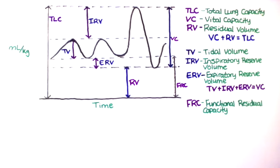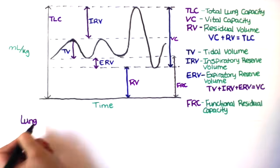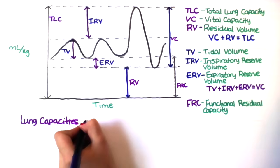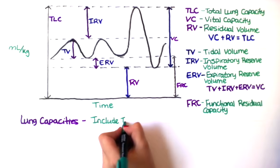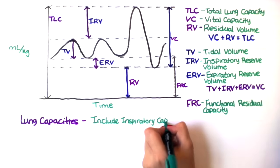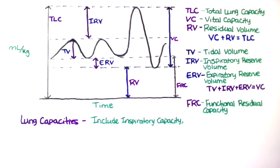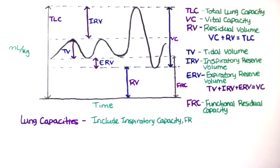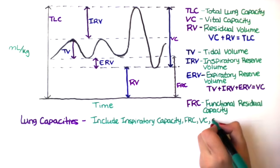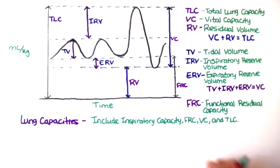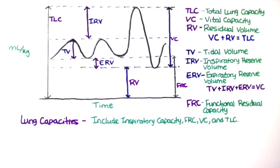There are three different types of capacities. The first is lung capacities, which includes inspiratory capacity, which we're going to discuss next, the functional residual capacity, vital capacity, and total lung capacity.